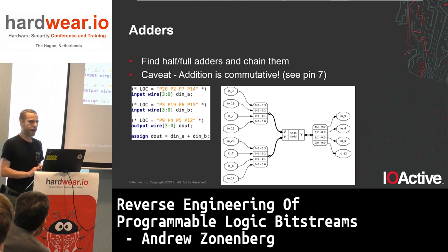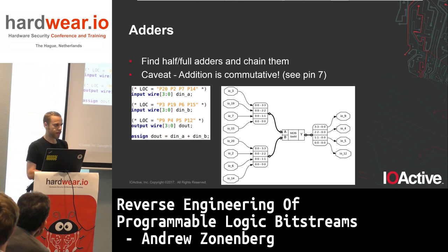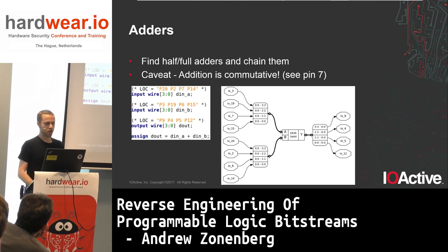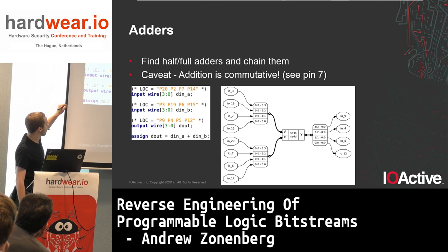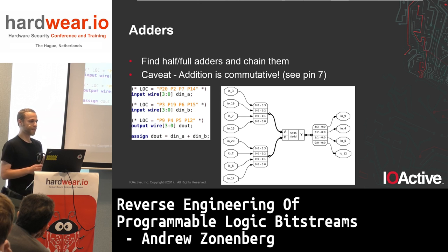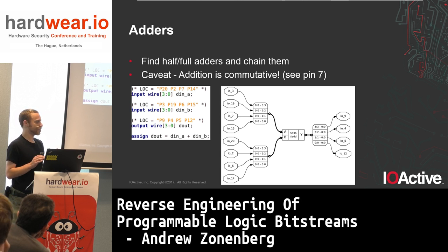Adders are a little less trivial than you might think. You can't naively just look for chains of half adders and full adders because while this tells you there's an adder, it won't tell you which input is which. Binary addition is commutative — we can't tell which bits of a given place value are which. If you swap the ones place of your two addends, or the twos place, it's logically equivalent. So you cannot assume that the inputs to an adder are logically connected in any particular order.